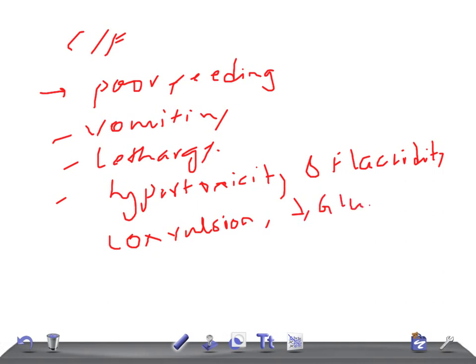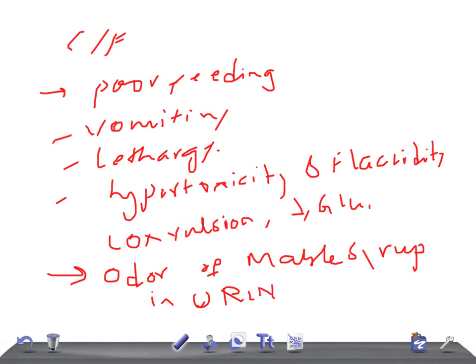And the most important point that you should look for in the USMLE case history is odor of maple syrup in urine, sweat, or cerumen. Very important is the odor of smell. That should be there to diagnose what you call MSUD.